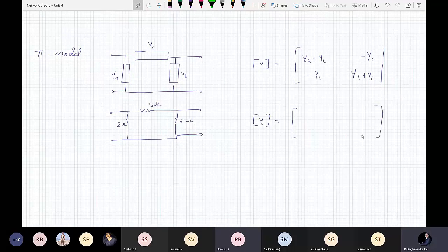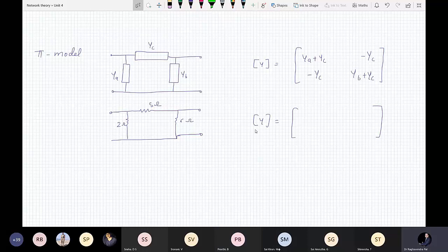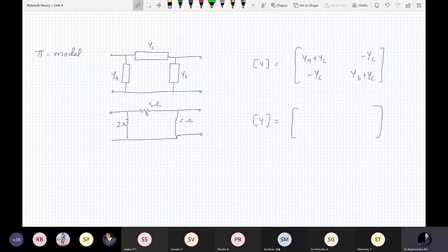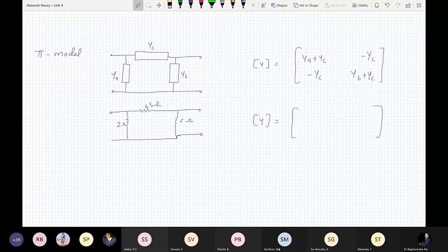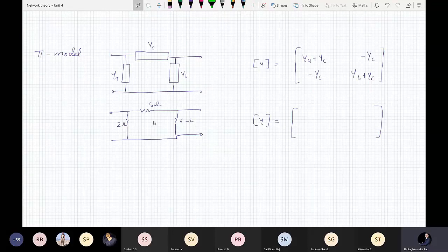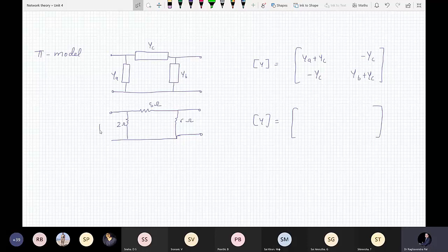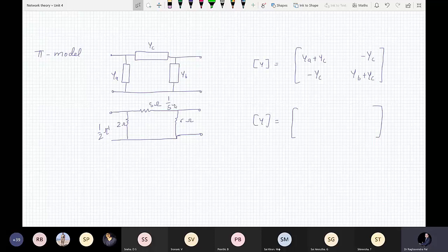7, first one 7, sir. That is wrong. Why? Because you should know what is Y. Y is 1 upon resistance. The unit of Y is ohm inverse. So you will have to change it with Y. It means this is the value of R. You will have to change it to that first. So it will be 1 by 2 ohm inverse, it is 1 upon 5 ohm inverse, and it is 1 by 6 ohm inverse.